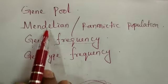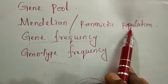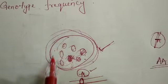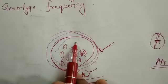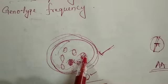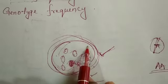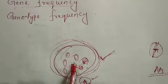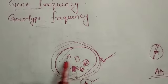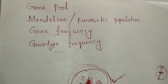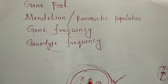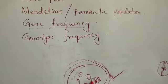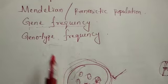Next comes the Mendelian or panmictic population. We are going to consider a large population which has many individuals, and each individual can interbreed with the other freely. That large population where organisms can freely interbreed with each other is called the panmictic population.